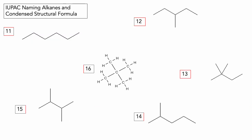Moving on to more skeletal formulae. We have one, two, three, four, five, six carbons with no side chains — that's hexane, pretty straightforward. On the right, we have one, two, three, four, five — pentane — and a single-carbon methyl group on the third carbon. It doesn't matter which direction you number from, it's going to be carbon three either way. So number 12 is 3-methylpentane.